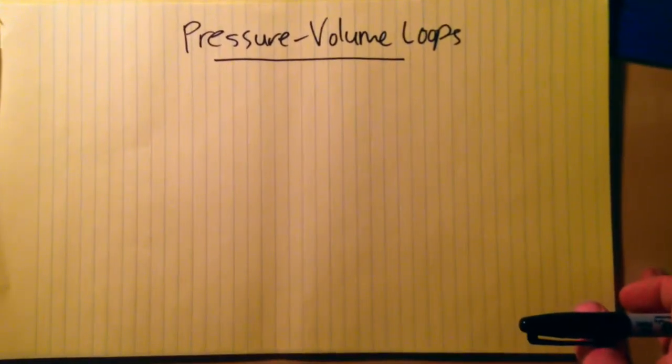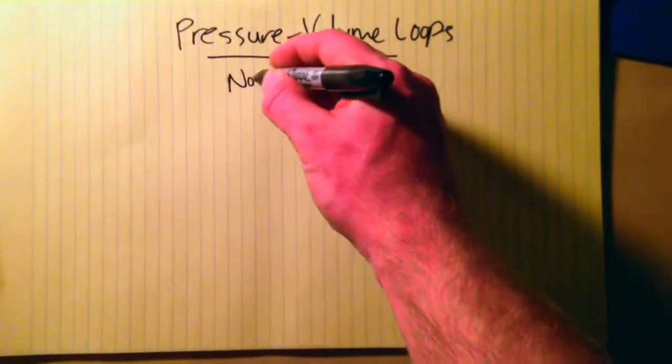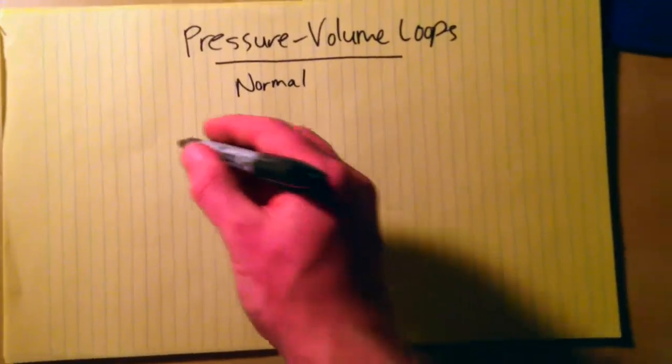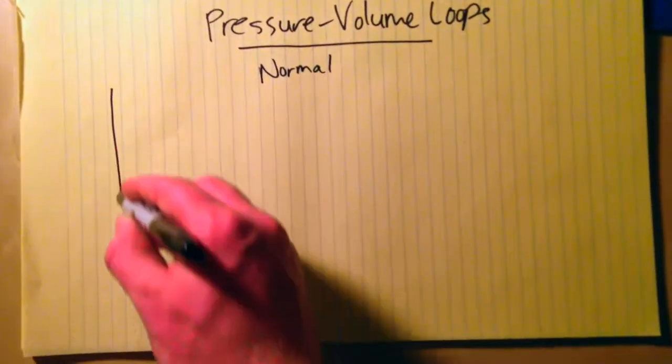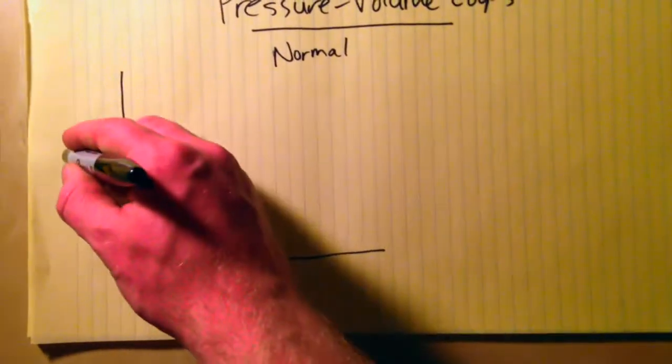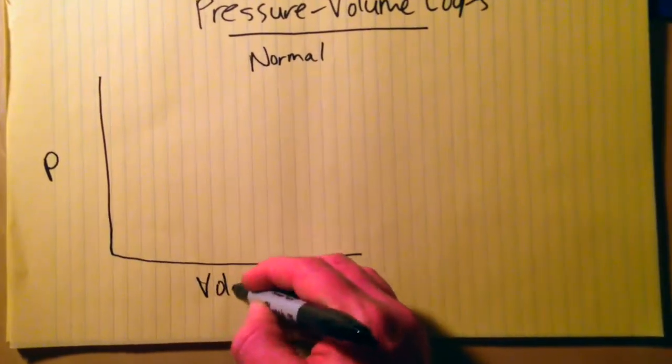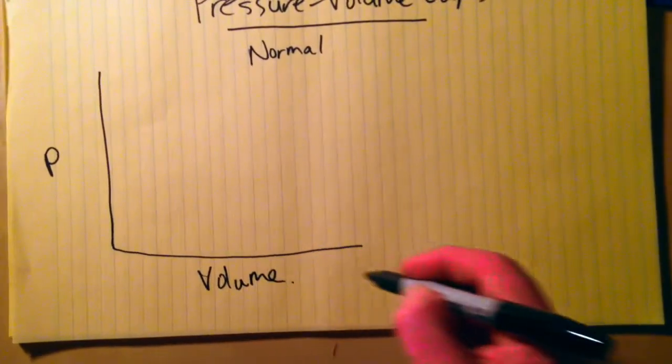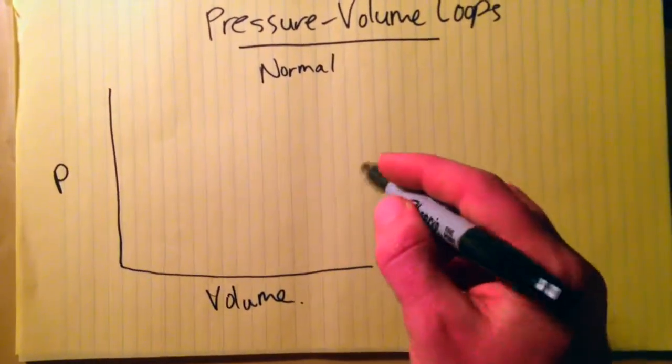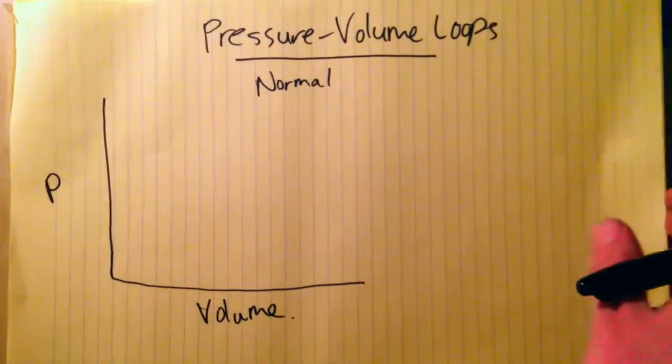There will be a series of videos on these, but tonight we'll start with the normal pressure-volume loop. We've all seen this graph before - it's pressure on the y-axis and volume on the x-axis. When you describe this, it's helpful just to start with a particular corner.